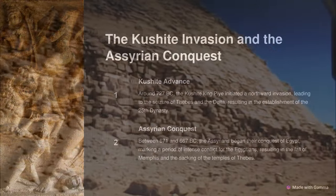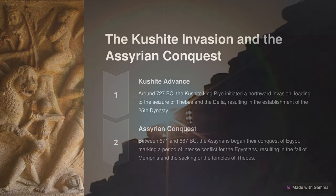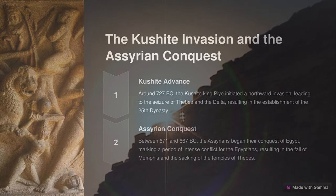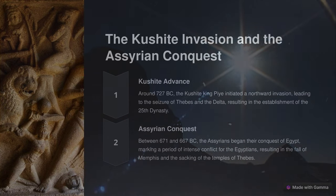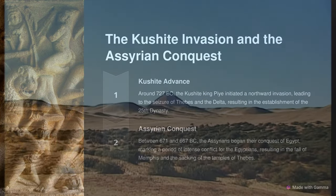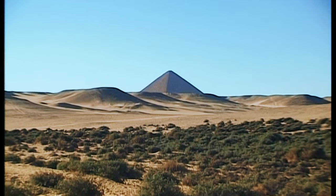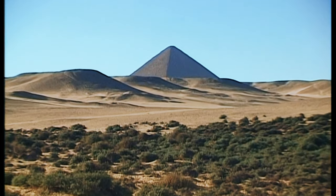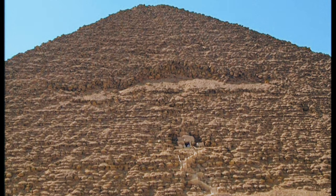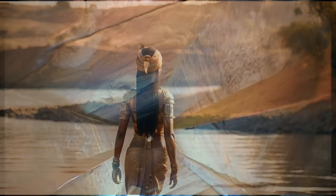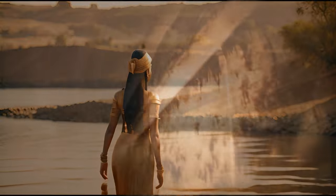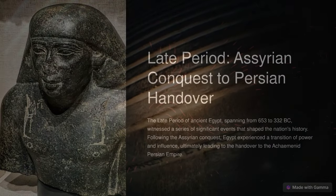Egypt's far-reaching prestige declined considerably toward the end of the Third Intermediate Period. Its foreign allies had fallen under the Assyrian sphere of influence, and by 700 BC war between the two states became inevitable. Between 671 and 667 BC, the Assyrians began the Assyrian conquest of Egypt. The reigns of both Taharqa and his successor Tantamani were filled with constant conflict with the Assyrians, against whom Egypt enjoyed several victories. However, the Assyrians pushed the Kushites back into Nubia, occupied Memphis, and sacked the temples of Thebes.